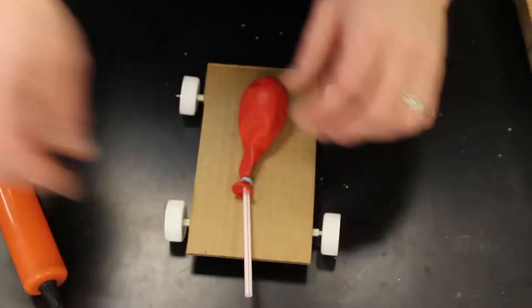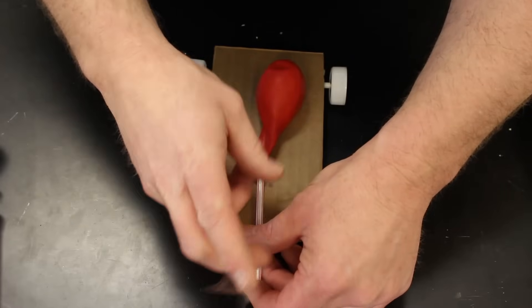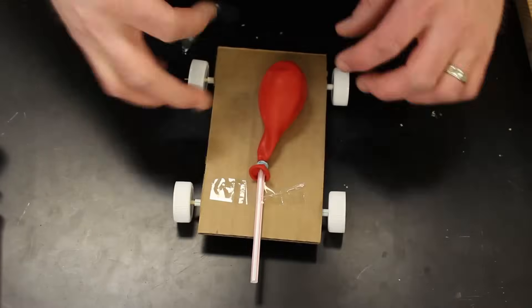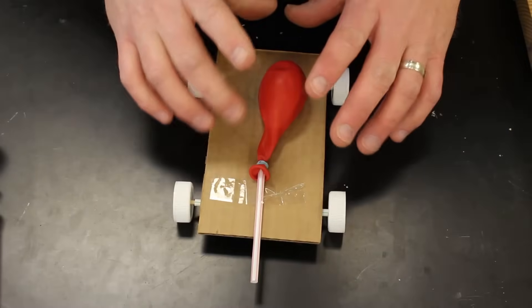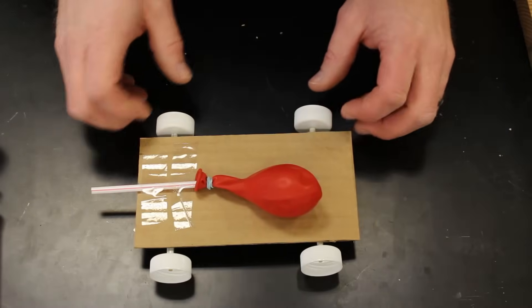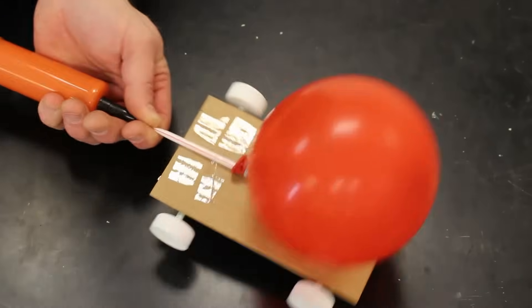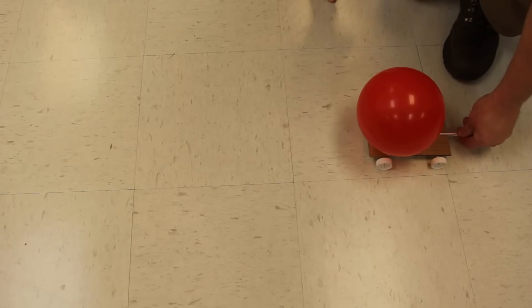Now to attach the balloon to the car, we're just going to use some scotch tape and make sure that it's straight. You may have to experiment with how far to put this balloon. You want the balloon to be supported. It's going to end up looking something like this. Let's test it out and see how it does.